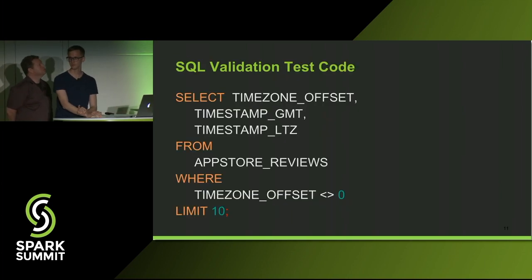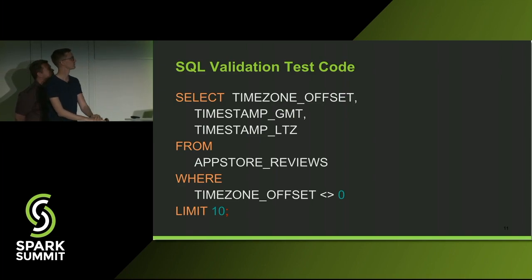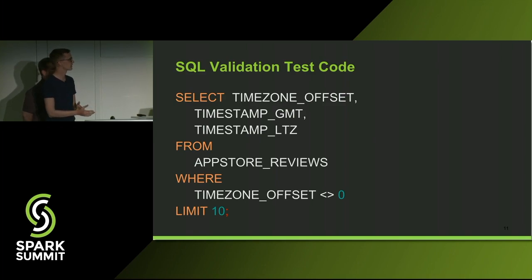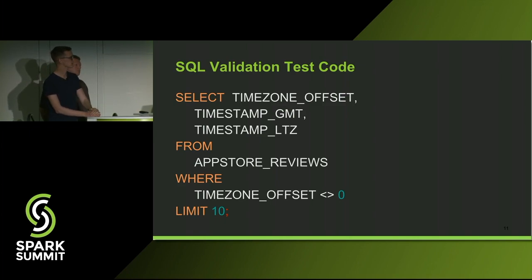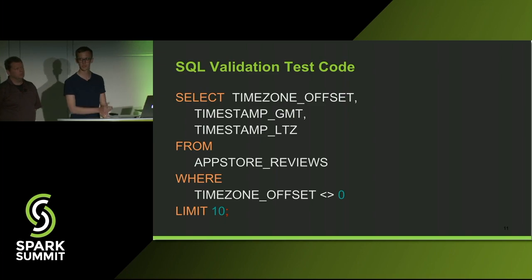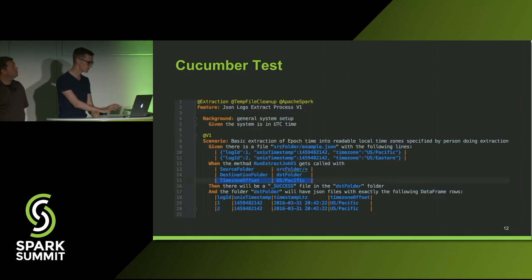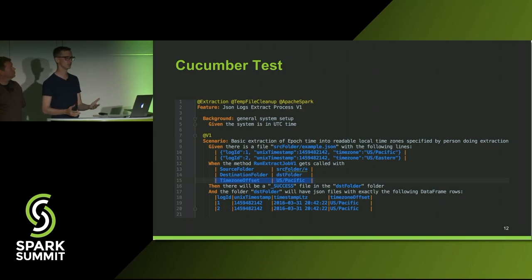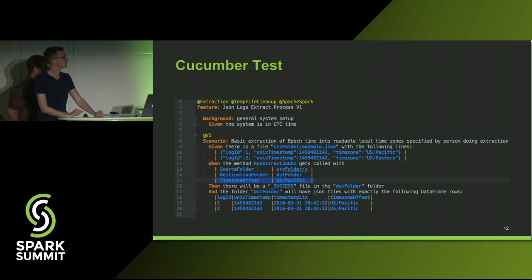In a typical data warehouse testing environment, you might run a query like this — you select all rows where the time zone offset isn't zero, look at the output, make sure the time zone offset equals the difference in time between GMT and LTZ time, look through all 10 rows, and that's a manual validation test. In the brave new world of Cucumber and behavior-driven development, we're able to write the tests such that they look like English text.